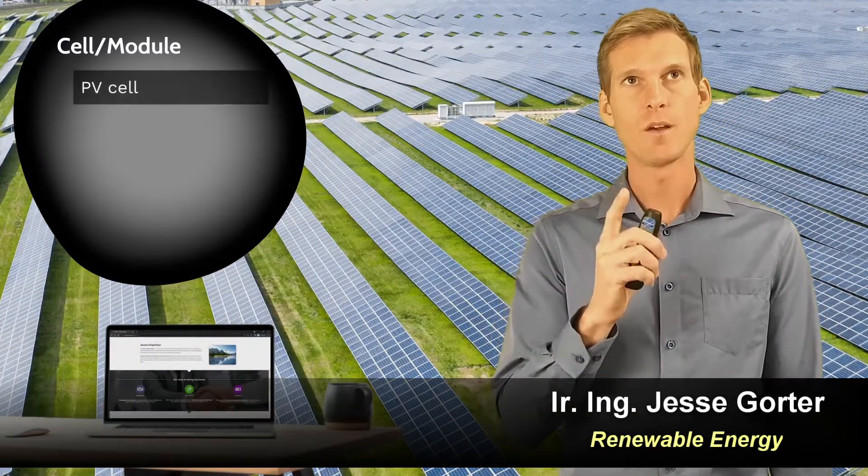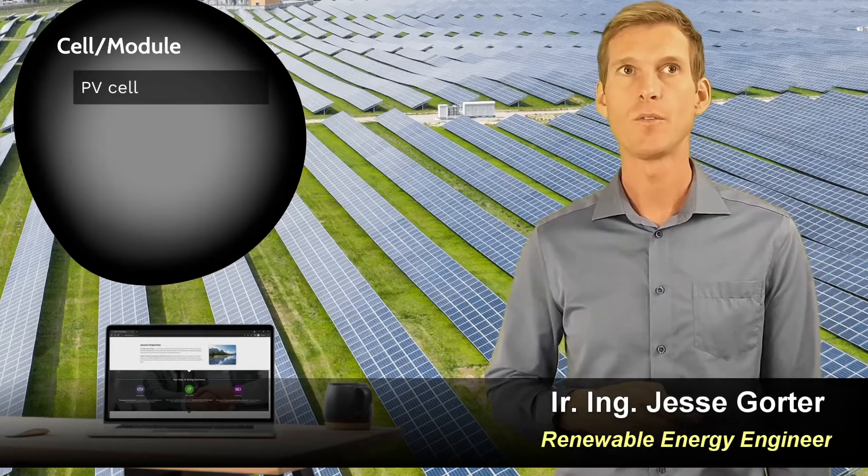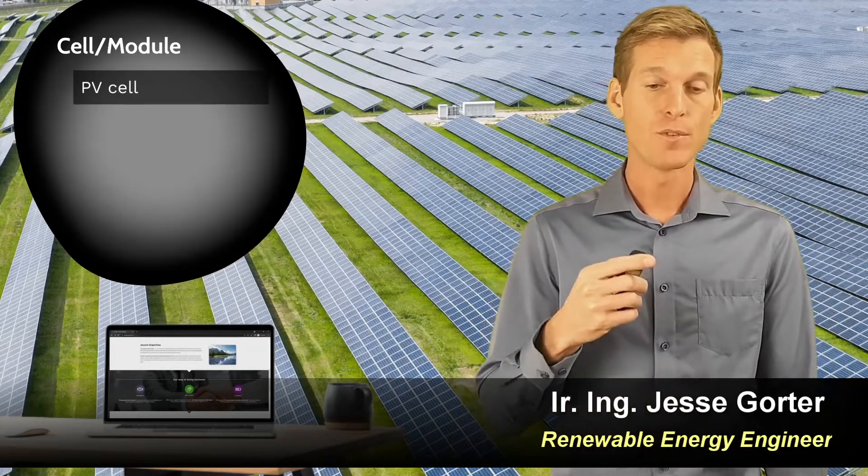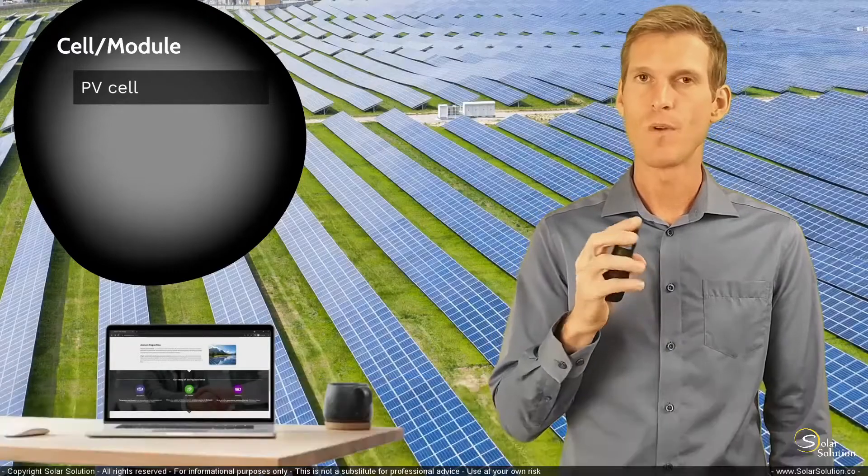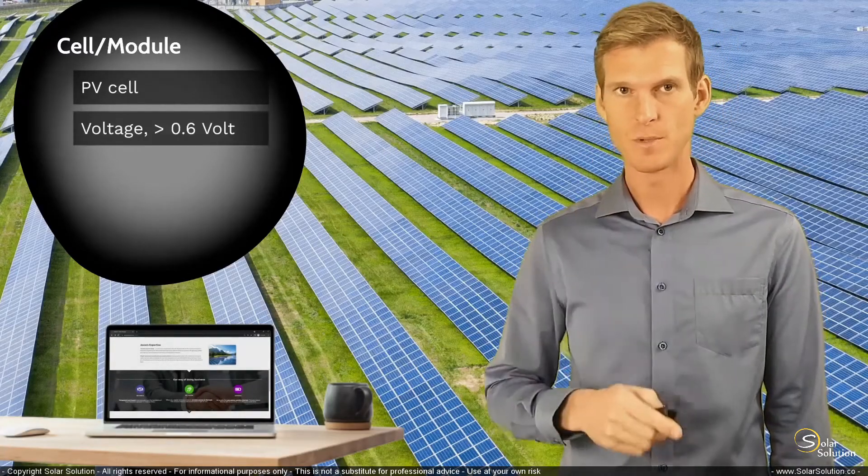And one cell, one individual cell is made from a polycrystalline or monocrystalline material, creates a voltage, an open circuit voltage of around or above 0.6 volts. One cell, 0.6 volts.